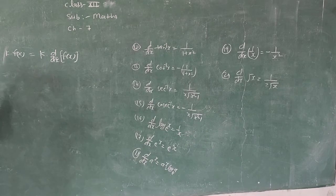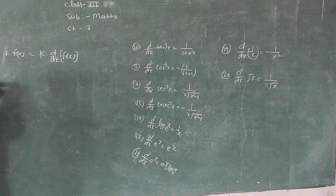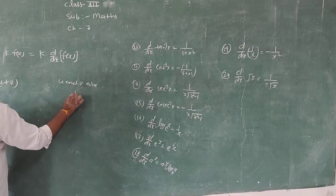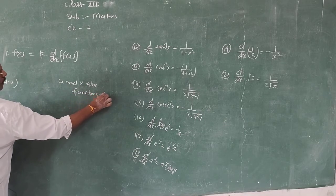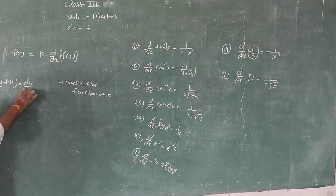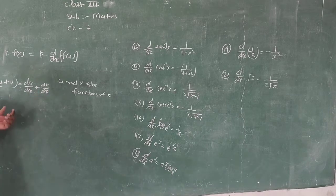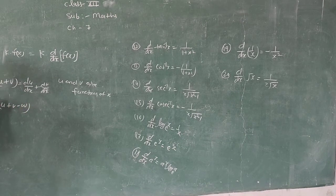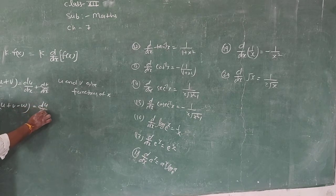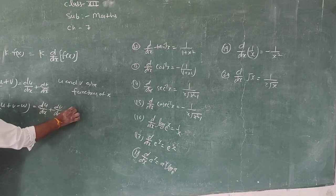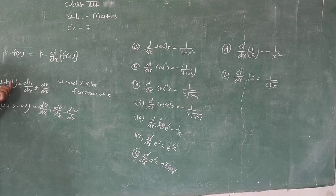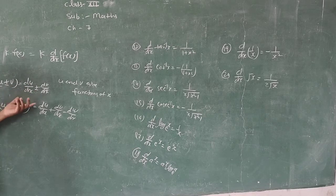Theorem 2: For two functions in sum or difference form — let u and v be functions of x — differentiation of u + v = du/dx + dv/dx. If there are three functions u + v − w, then it equals du/dx + dv/dx − dw/dx. For sum, add the differentiations; for difference, subtract; for three functions, all three signs come through.